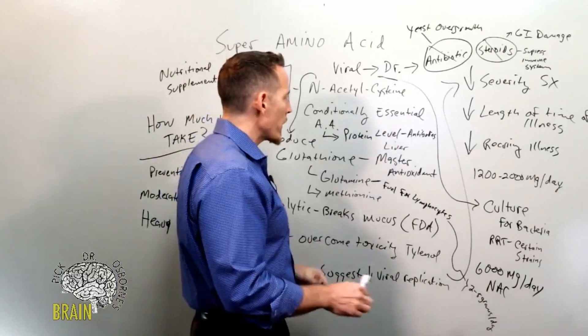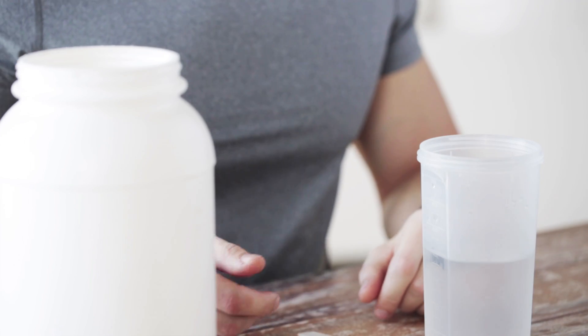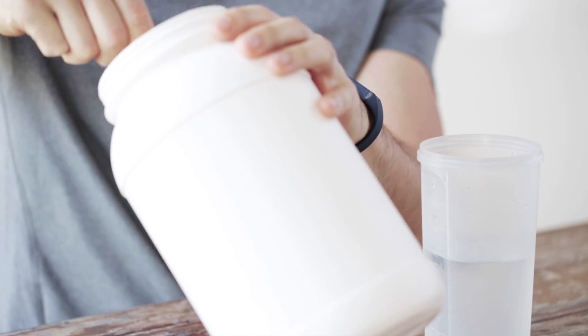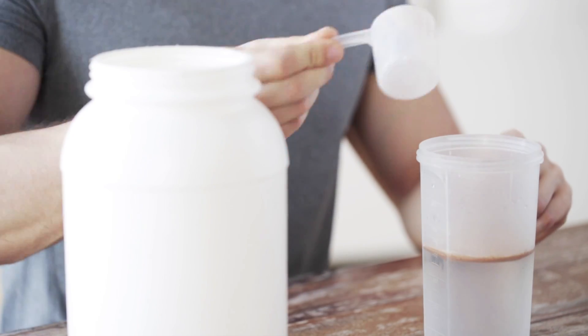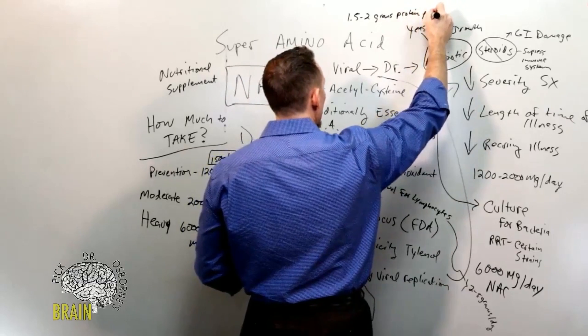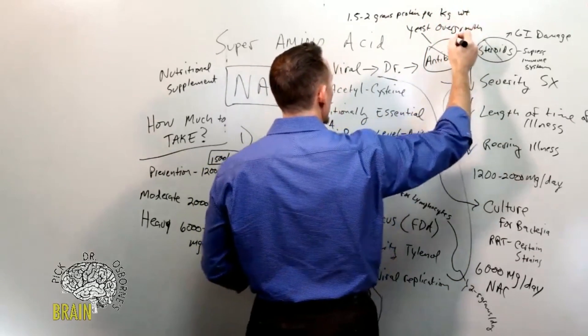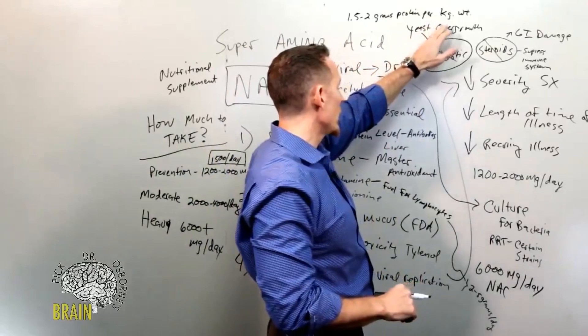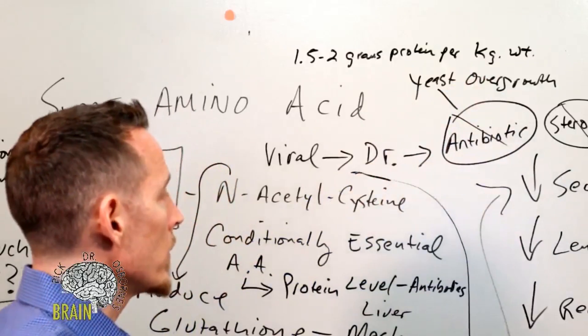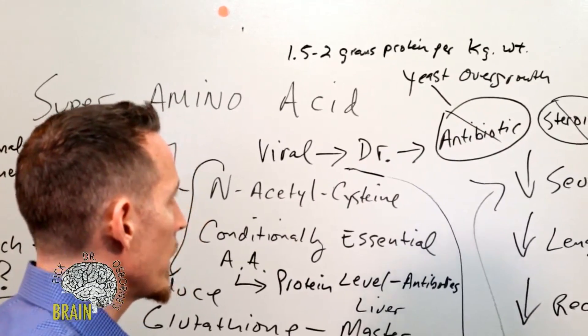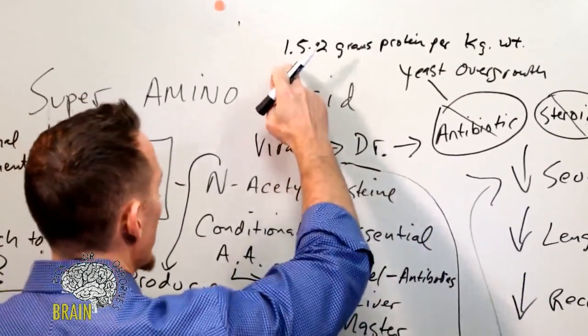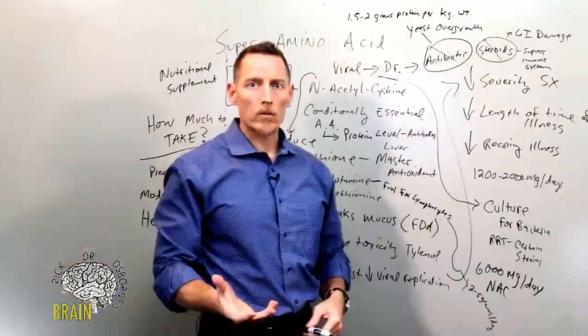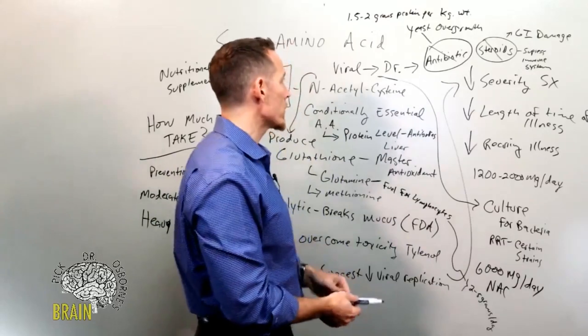Especially if you work out on a regular basis, the general way to look at what your protein need is: you need about 1.5 to 2 grams of protein per kilogram of body weight. You can determine your pounds if you're in the U.S. - take pounds and divide by 2.2 to get kilograms. 1.5 to 2 grams of protein per kilogram of body weight is what you're going to need if you're working out rather steadily, rather aggressively.